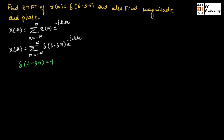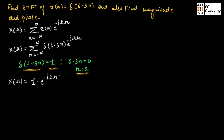This delta function equals 1 when 6 − 3n = 0, which gives n = 2. So for n = 2, the given delta function equals 1. We can write x(ω) equal to 1 · e^(−jωn) for n = 2. Substituting n = 2, we get x(ω) = e^(−j2ω). This is the DTFT of the given sequence.